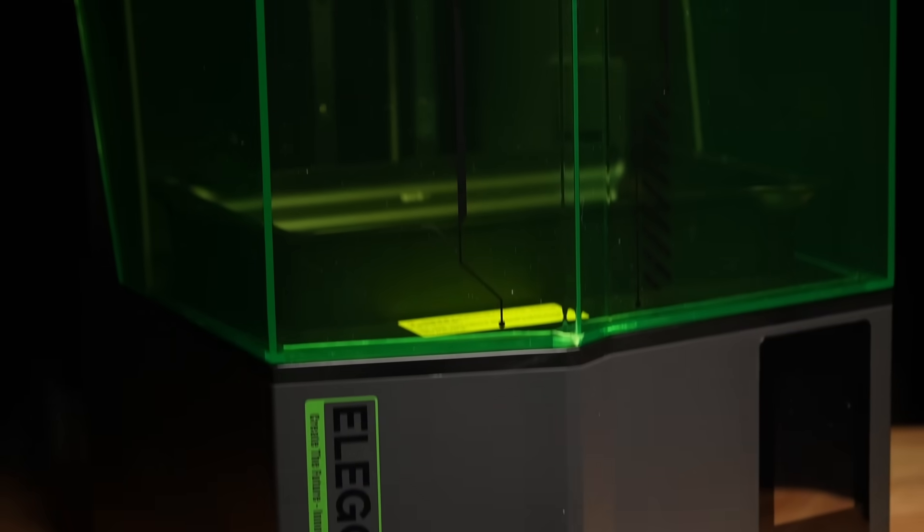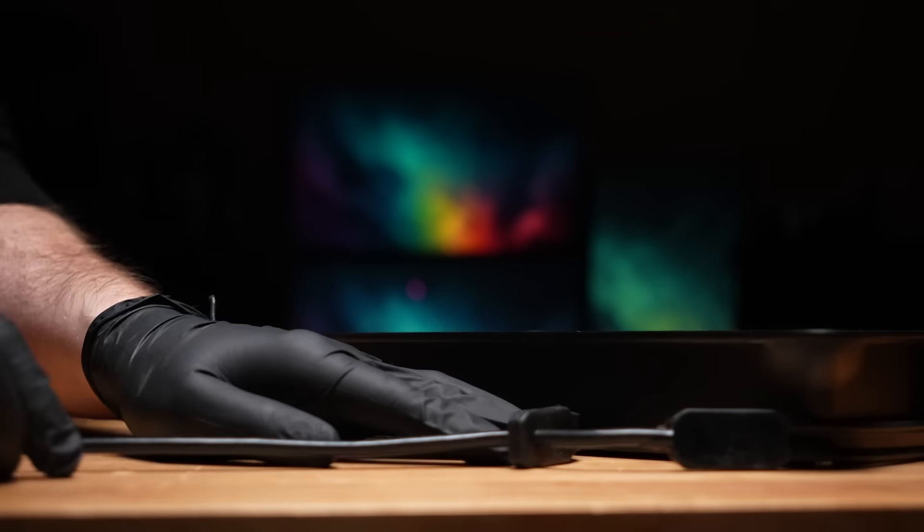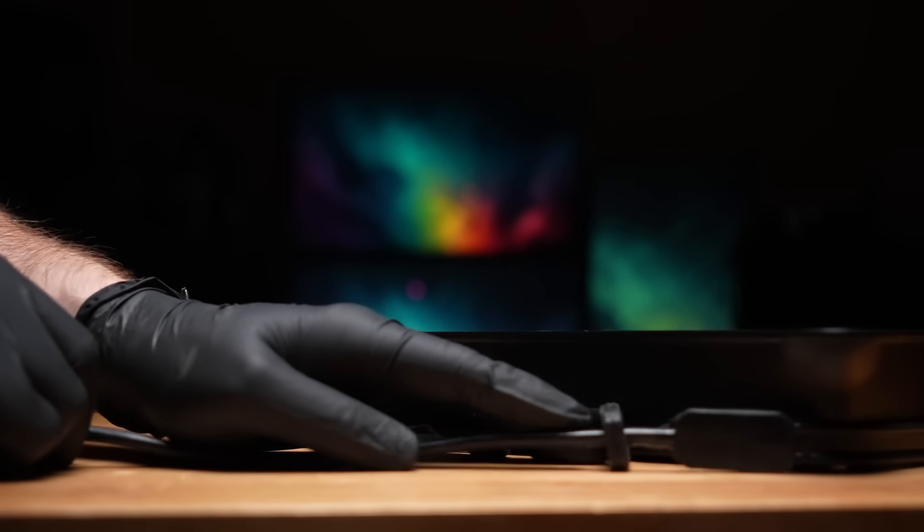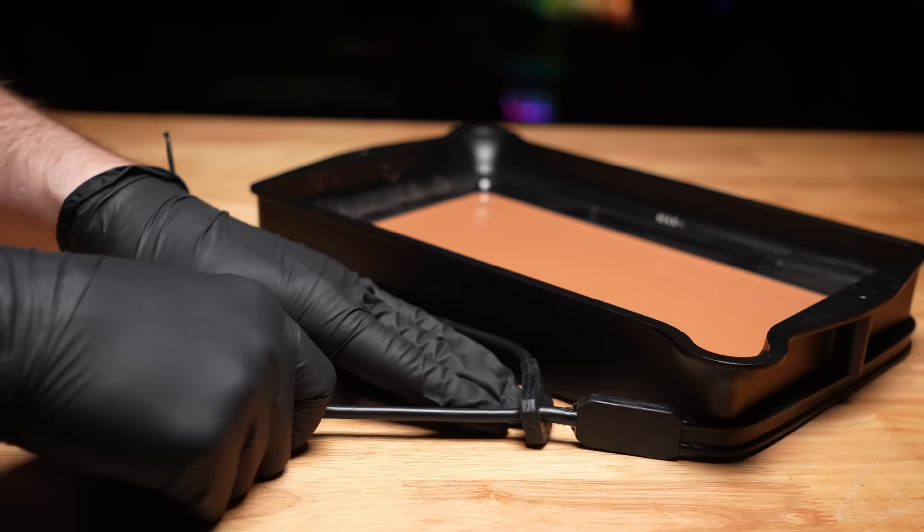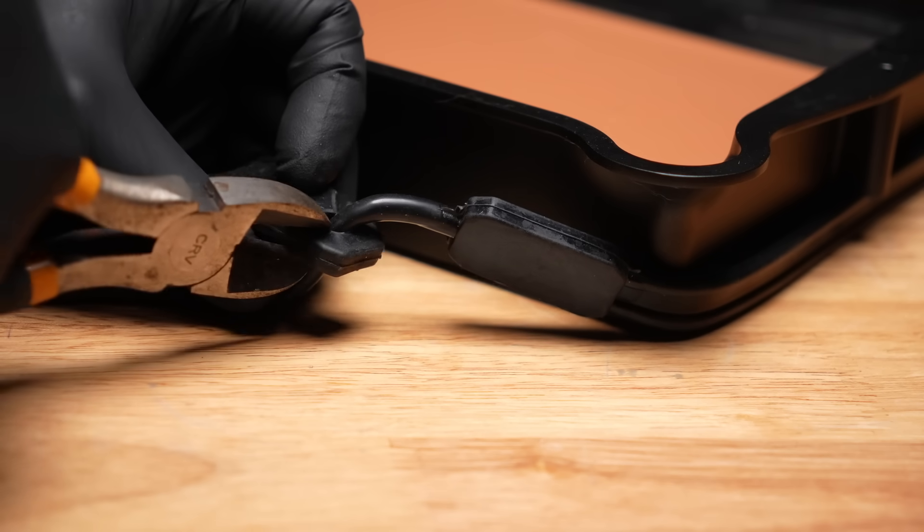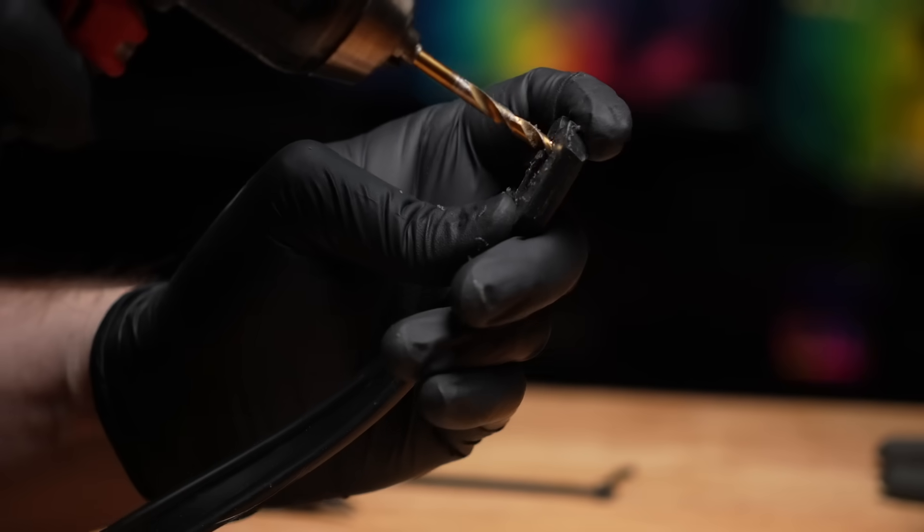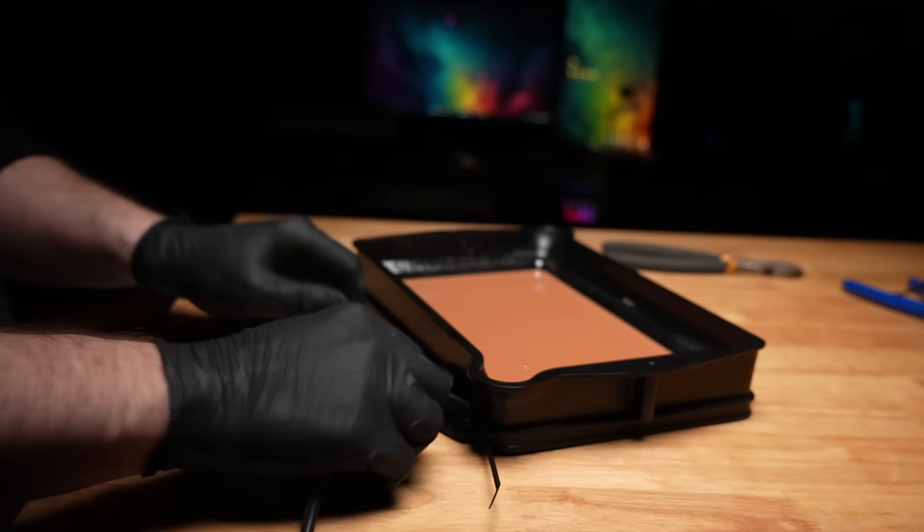I'm using here the new Saturn 4 printer from Elegoo for these tests and it looks like this particular fermentation belt wraps almost perfectly around, fitting snugly beneath those vat screws but unfortunately being a little bit too long where this loop terminates. To work around this I just snipped that loop, carefully put a couple of holes through the rubber and have secured the belt tightly in place around that vat using some zip ties.